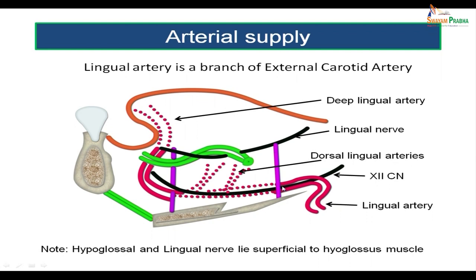On the superficial surface of the hyoglossus muscle you have two important nerves — the lingual nerve and the hypoglossal nerve. Note also that the submandibular duct loops across the lingual nerve, and the submandibular duct opens near the floor of the mouth.